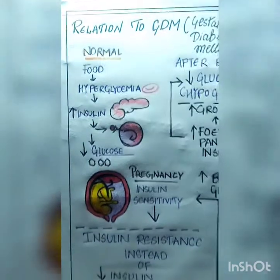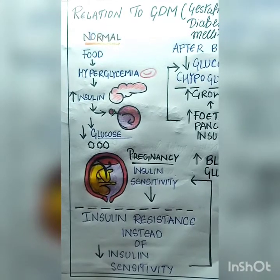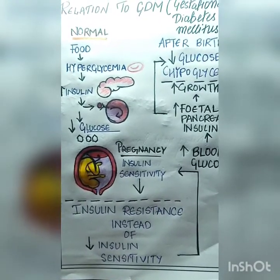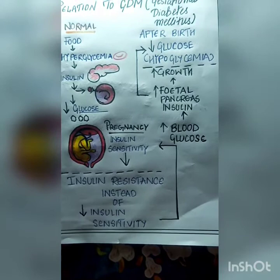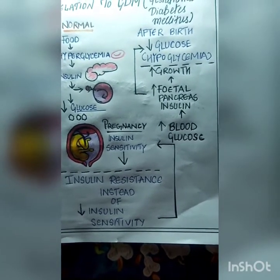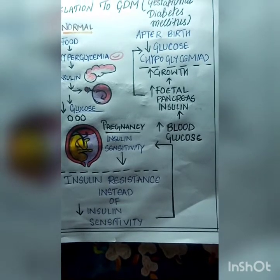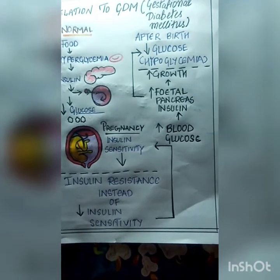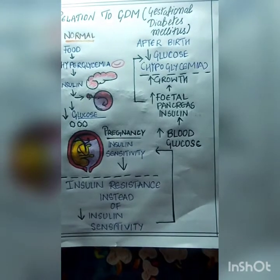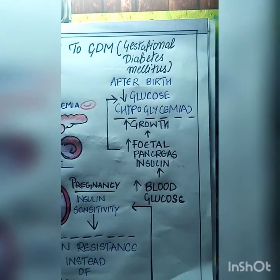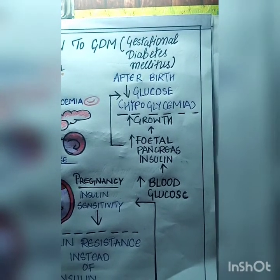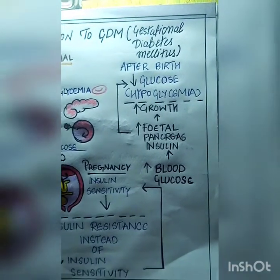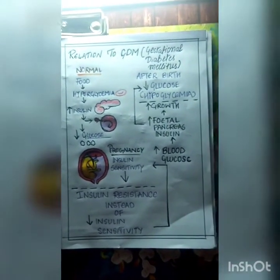In pregnant mothers, there is normally increased insulin sensitivity. But in gestational diabetes mellitus, there is insulin resistance instead. Insulin resistance is present in the mother, but in the child, if there is increased blood glucose, there will be increased fetal pancreas insulin production. Because of the increased amount of insulin, there will be increased growth, leading to a larger baby. After birth, when there is no supply of glucose from the mother but the child still has increased insulin, this leads to hypoglycemia.